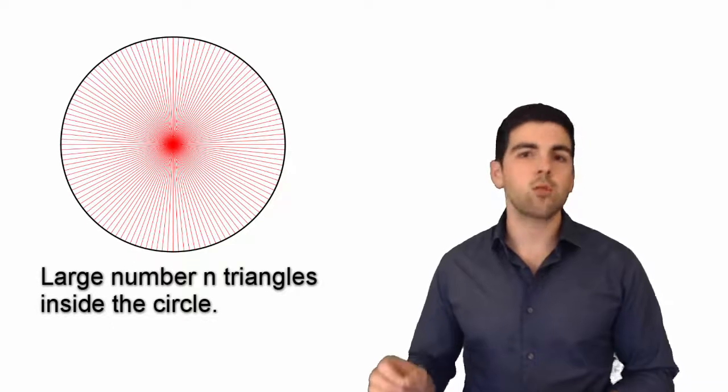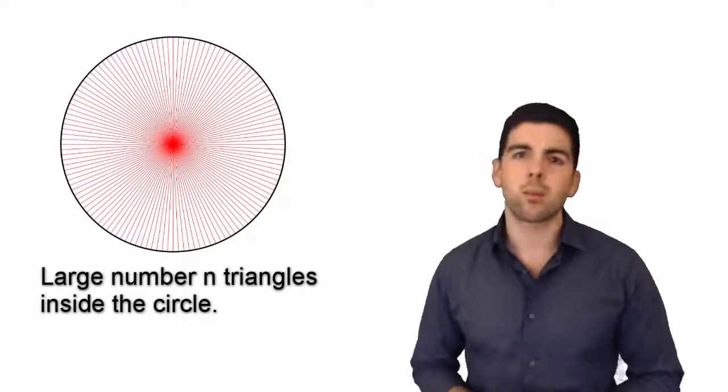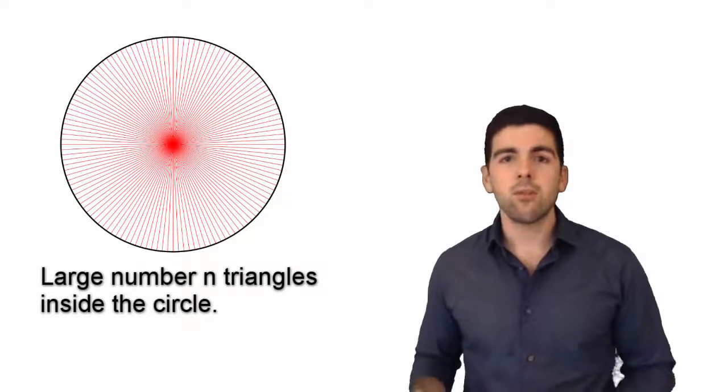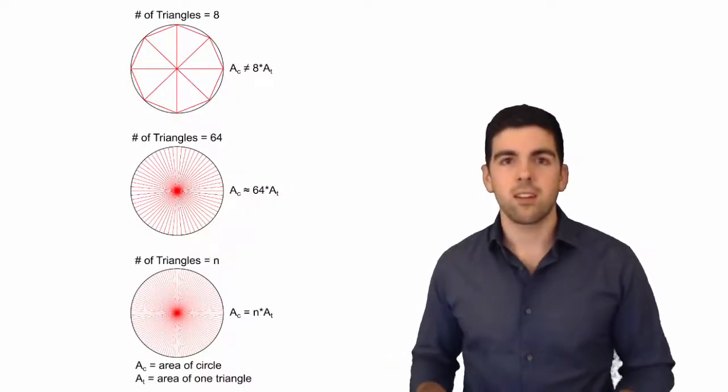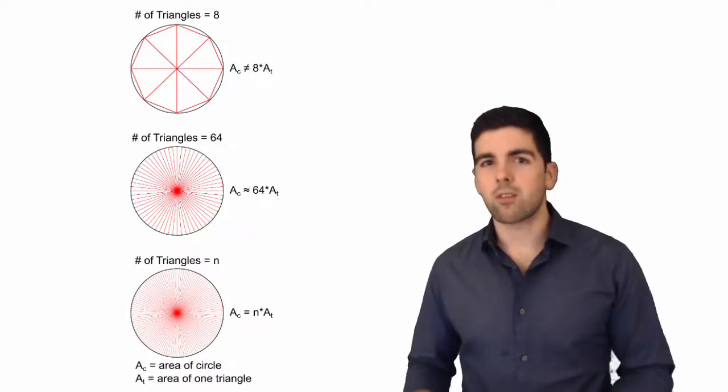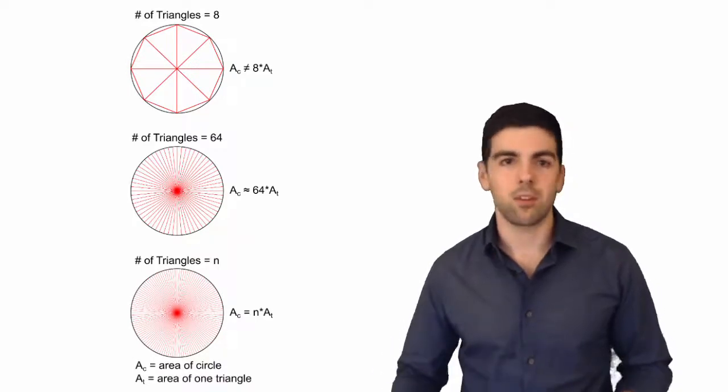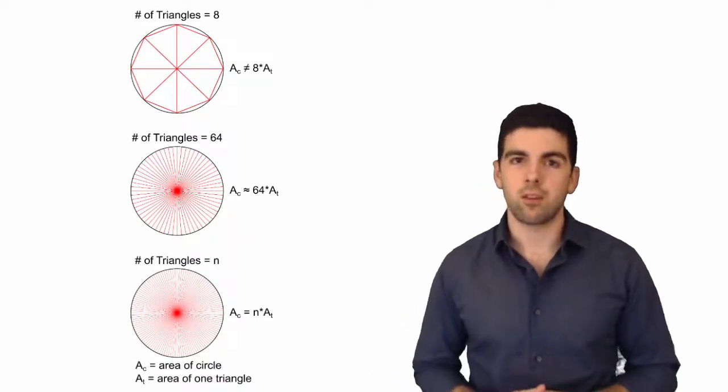And imagine that N is really, really large. A very large number N and a very small number B for the base. Well if you do that you can see just from these pictures that eventually a large enough number of triangles really approximates almost exactly the area of a circle. And an infinite number of triangles would approximate the area of a circle exactly.